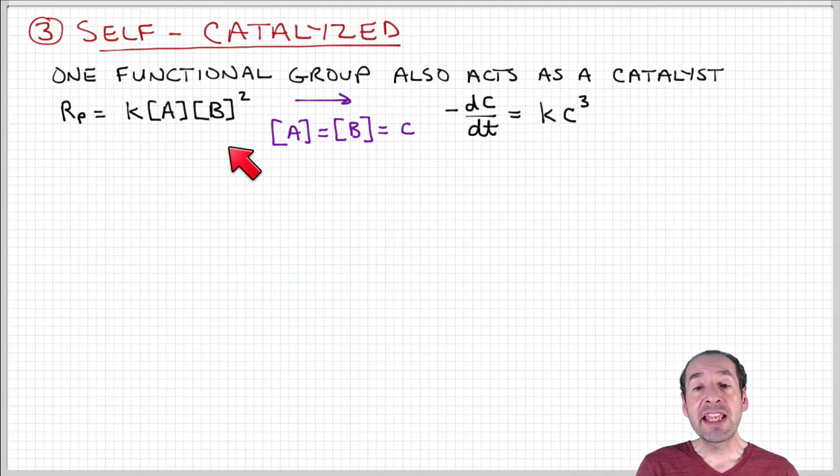In that case, we need to also consider the concentration of that monomer in terms of its catalytic activity. When we incorporate that into the rate law, say that monomer B functions as a catalyst as well, then we have another concentration of B. So our rate law is k times the concentration of A times the concentration of B squared.